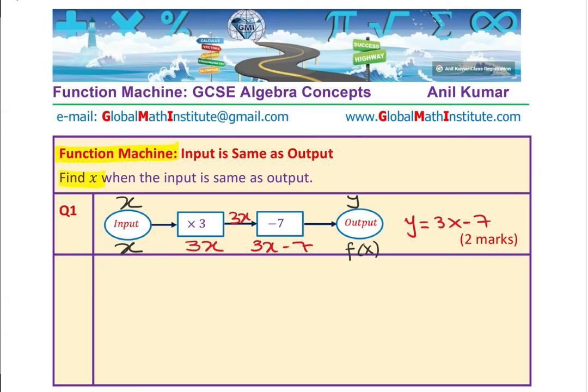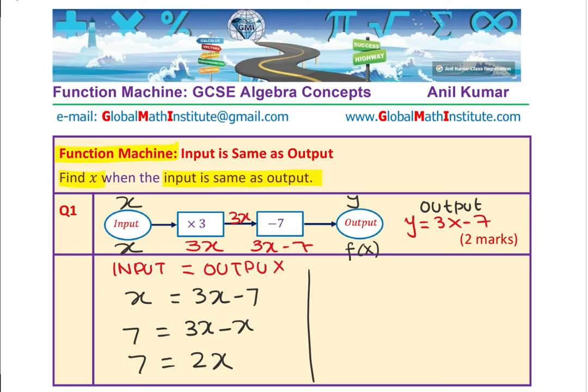The condition given to us is find x when input is same as output. That means I have to equate input to output. Input clearly is x and the output is y, which is 3x minus 7. Now you just need to solve this equation, 3x minus 7. I can bring 7 to this side, we get 3x. x minus 3x is equal to minus 7, that means 7 is equal to 2 times x. And clearly, when 2x is equal to 7, x is 7 divided by 2, you can say 3.5.